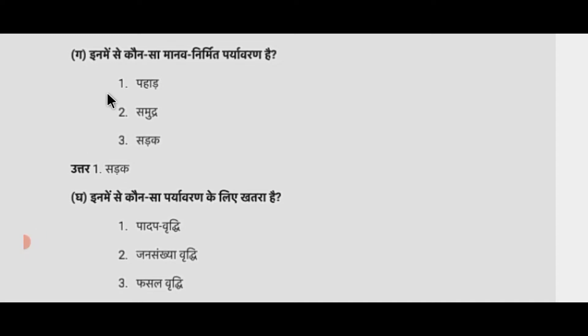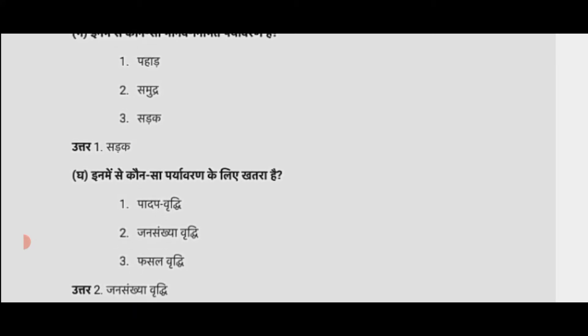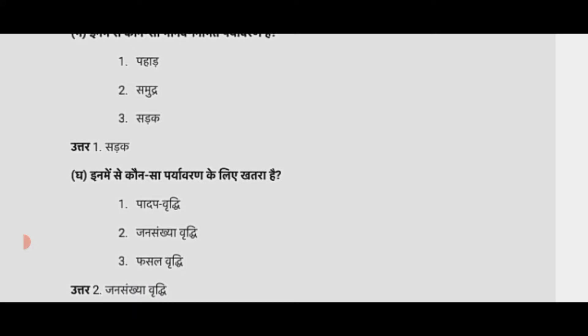अगला प्रश्न: इनमें से कौन सा मानव-निर्मित पर्यावरण है? विकल्प देखते हैं: पहाड़, समुद्र, सड़क। इसका सही उत्तर होगा - सड़क। अगला प्रश्न: इनमें से कौन सा पर्यावरण के लिए खतरा है? विकल्प: पादप वृद्धि, जनसंख्या वृद्धि, फसल वृद्धि। इसका सही उत्तर - जनसंख्या वृद्धि पर्यावरण के लिए खतरा है।